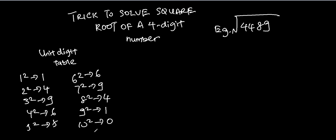And with this we'll be able to try and solve the square root of a four-digit number. So let me write down this four-digit number: 4489. The first step is to split this four-digit number into the first two digits and the last two digits. In this case, we have 44 and 89.